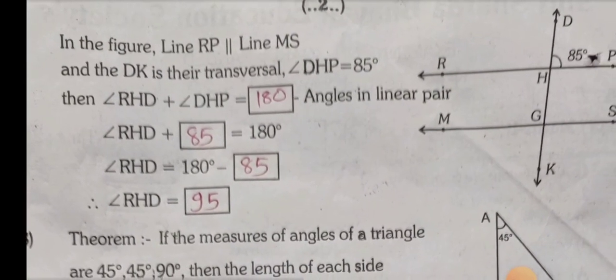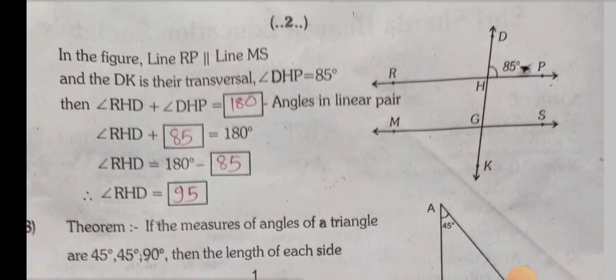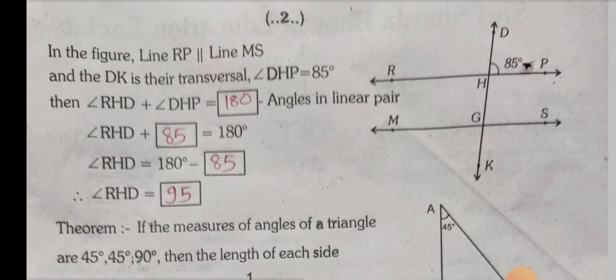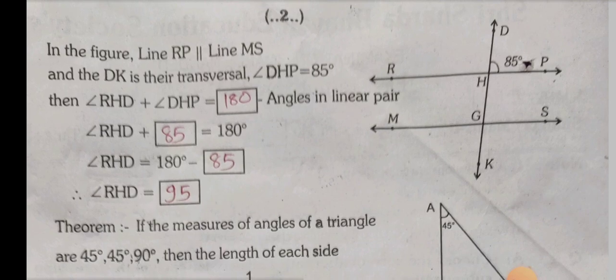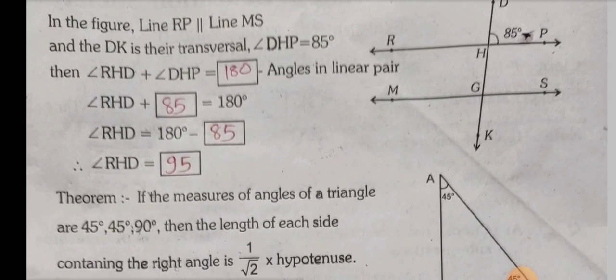Activity 2: In the figure, line RP is parallel to line MS and DK is the transversal. Angle DHB equals 85. Therefore angle RSD plus angle DHB equals 180 (angles in linear pair). So angle RSD plus 85 equals 180, therefore angle RSD equals 95.